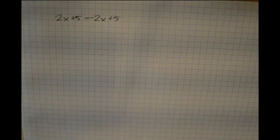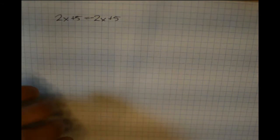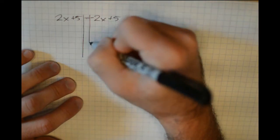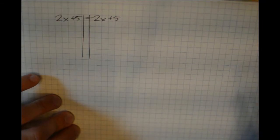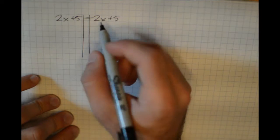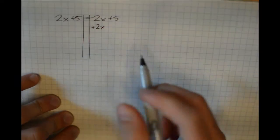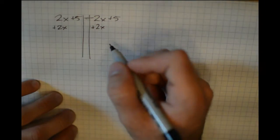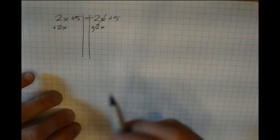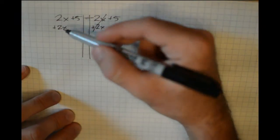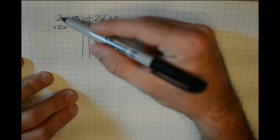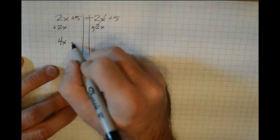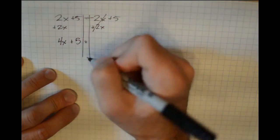Let's look at one last example that gets easily confused with no solution or all real numbers: 2x plus 5 equals negative 2x plus 5. I'll separate left and right. The goal is variable terms on one side, number terms on the other. I don't want the negative 2x on the right, so I add 2x to both sides. On the right, negative 2x plus 2x is 0x — eliminated. On the left, 2x plus 2x is 4x, not eliminated. Plus 5 and the equal sign and the 5 all come down.